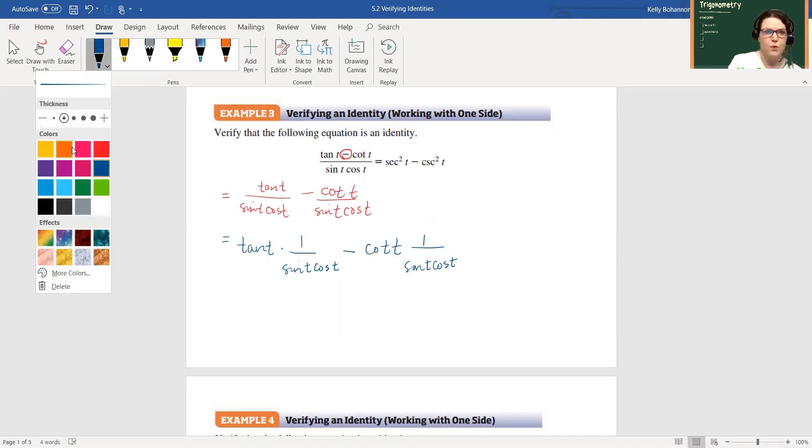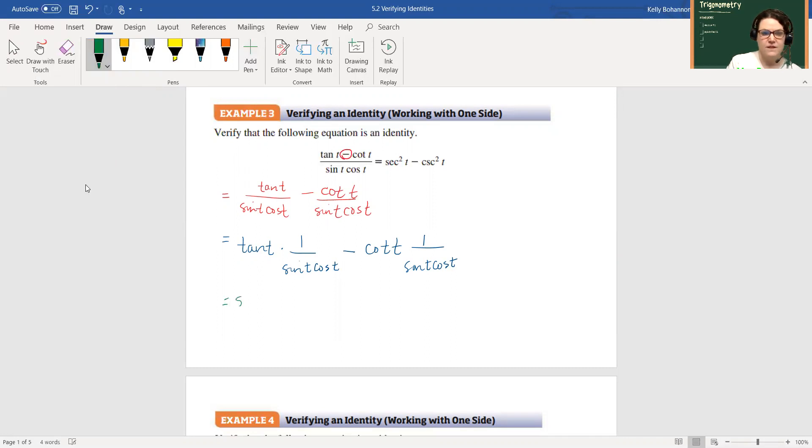I'm going to rewrite tangent as the same thing as sine over cosine t, and I'm going to rewrite cotangent t as cosine over sine t.